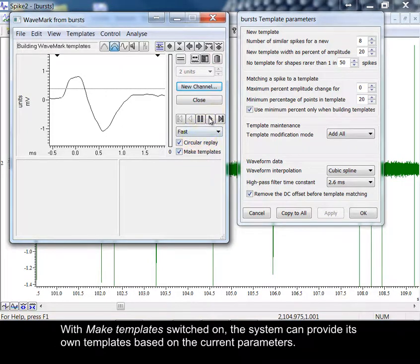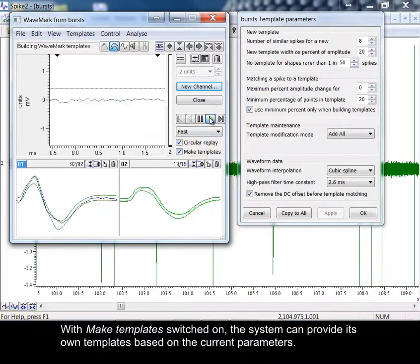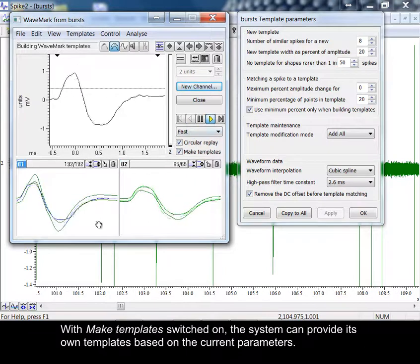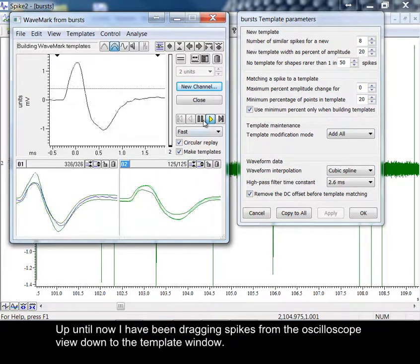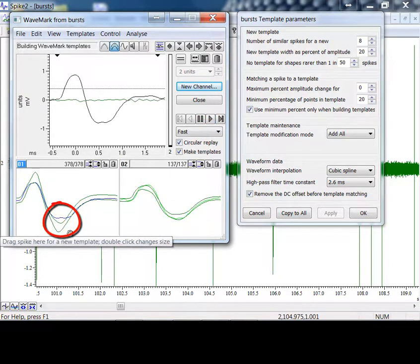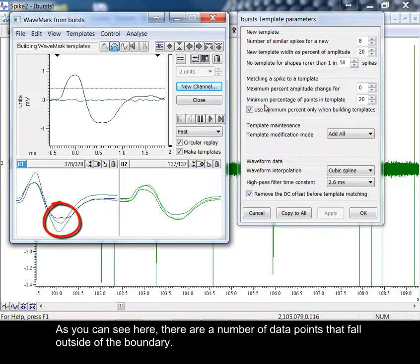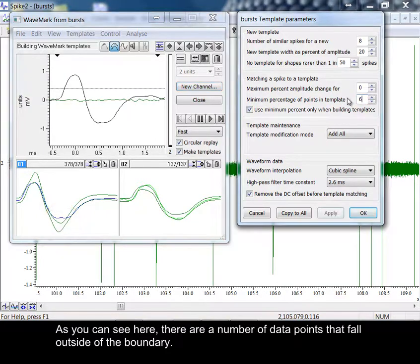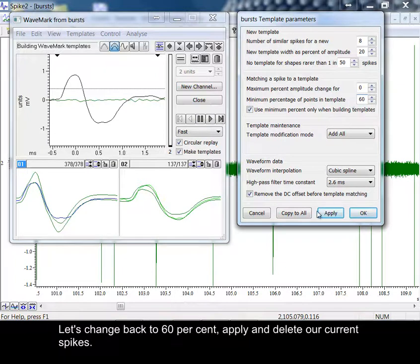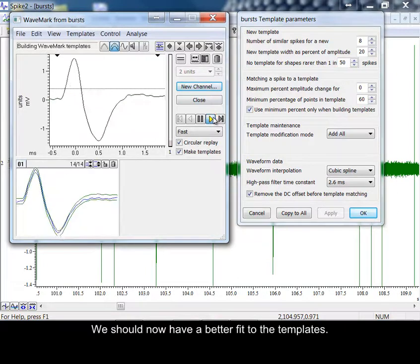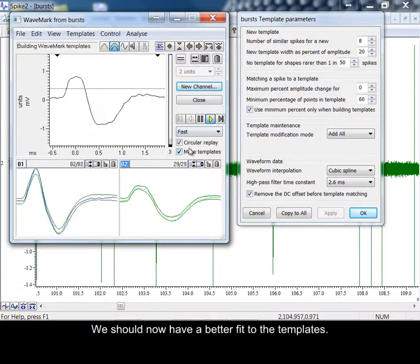With Make Templates switched on, the system can provide its own templates based on the current parameters. Up until now, I have been dragging spikes from the oscilloscope view down to the template window. As you can see here, there are a number of data points that fall outside of the boundary. Let's change back to 60%, apply, and delete our current spikes. We should now have a better fit to the templates.